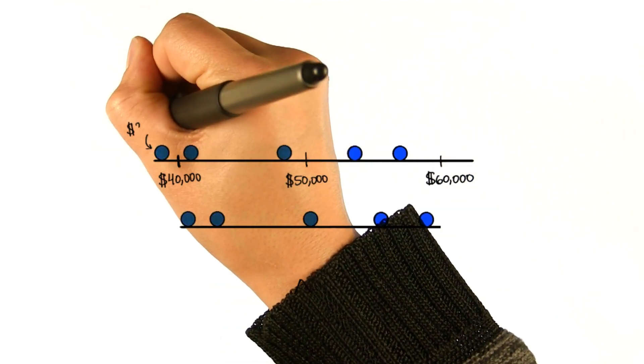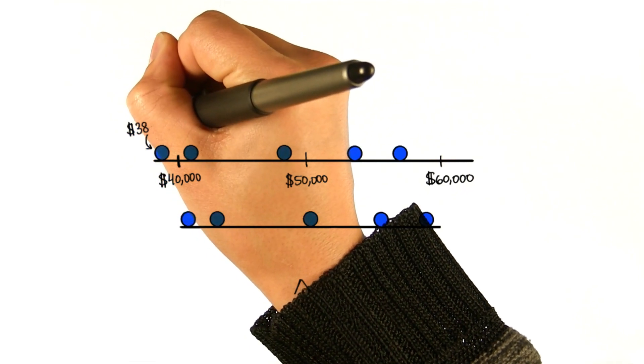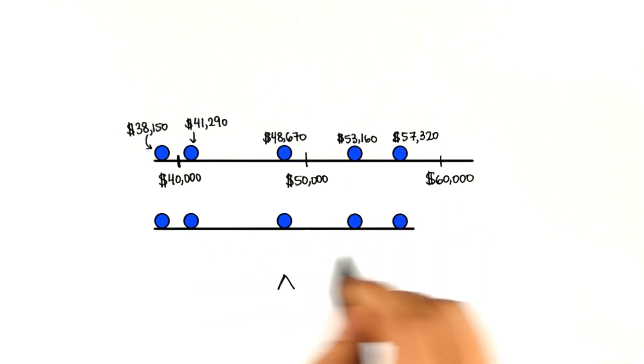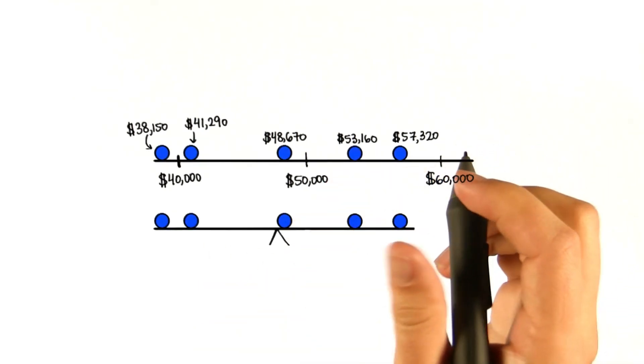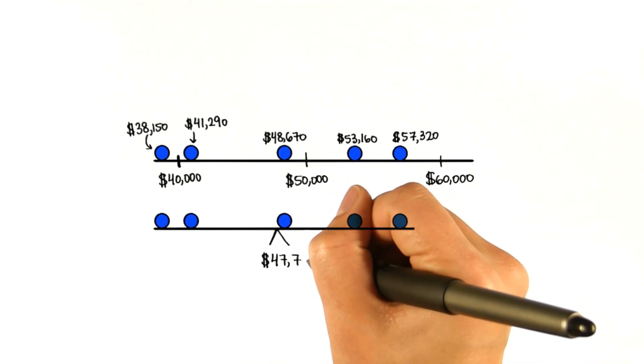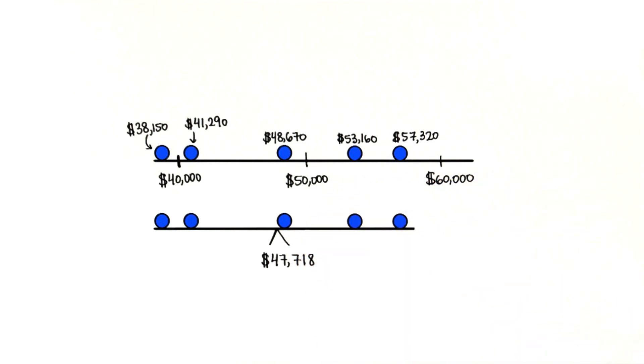These rocks or balls represent the salaries of the geography majors. Now, if this were a teeter-totter, where should the pivot go so that it balances? That's basically the mean, which in this data set of the salaries of geography majors is $47,718, like you calculated.